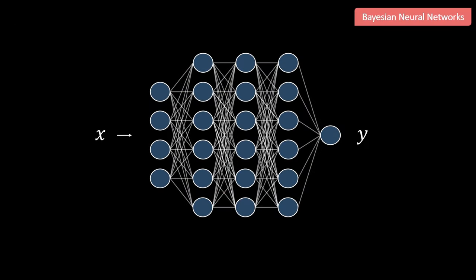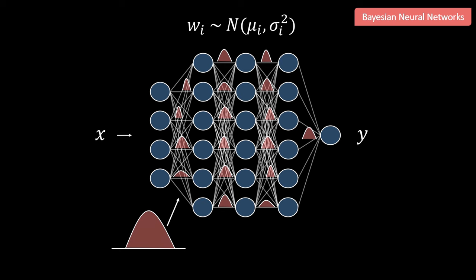In BNNs each individual weight between two neurons is defined as a probability distribution. This can for example be a Gaussian distribution but also more exotic choices. Learning a distribution on the weights is similar to having an infinite ensemble of networks.